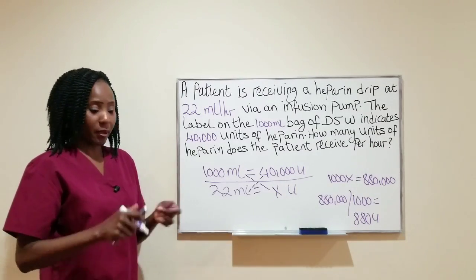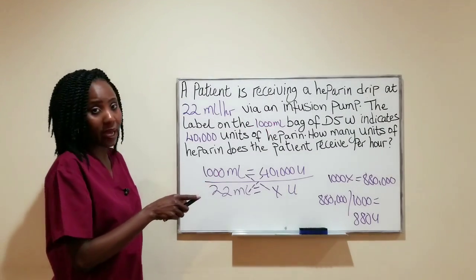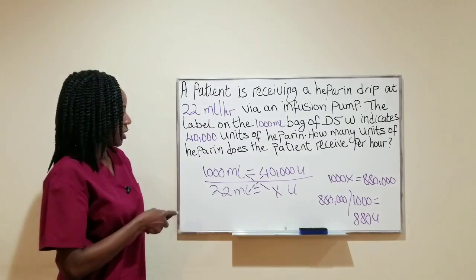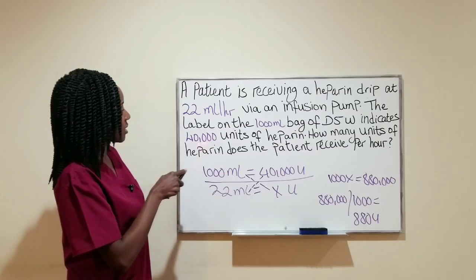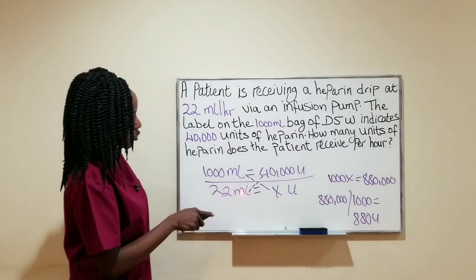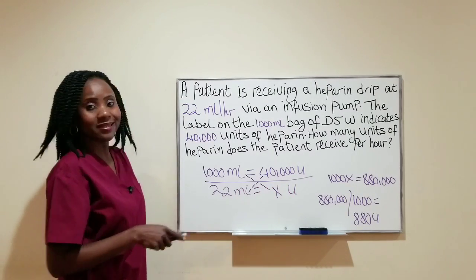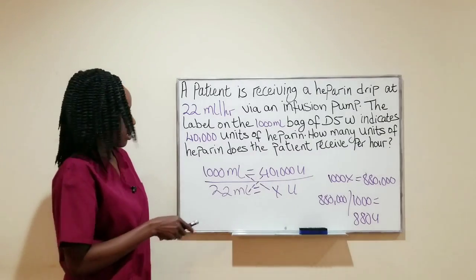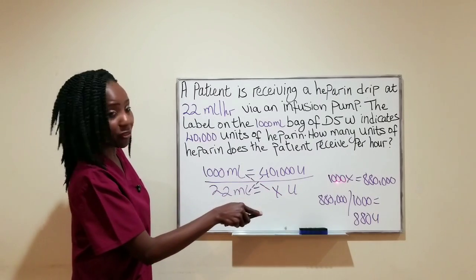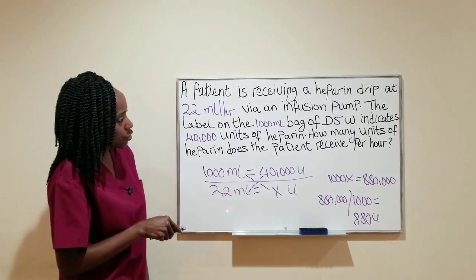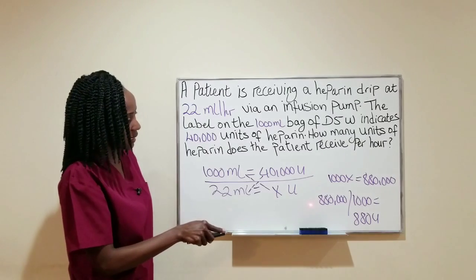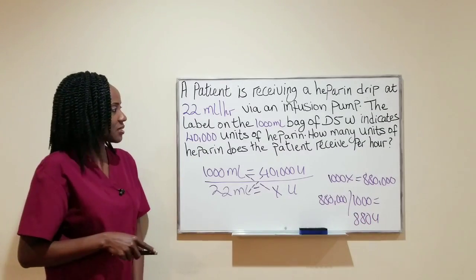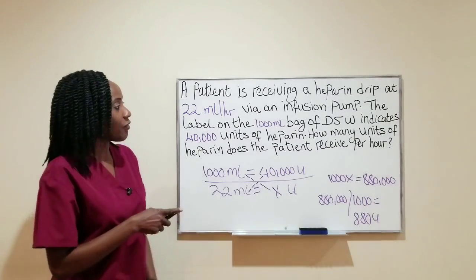Let's go over the steps again. First, because the question said it was a liter bag, I converted my liter to milliliters. Then I set up my equation: 1,000 milliliters equals 40,000 units, over 22 milliliters equals X — where X represents how many units of heparin the patient is receiving per hour. I cross-multiplied 1,000 milliliters times X to get 1,000X, then 40,000 units times 22 to get 880,000. Dividing 880,000 by 1,000, I arrived at 880 units — the patient is receiving 880 units of heparin per hour.